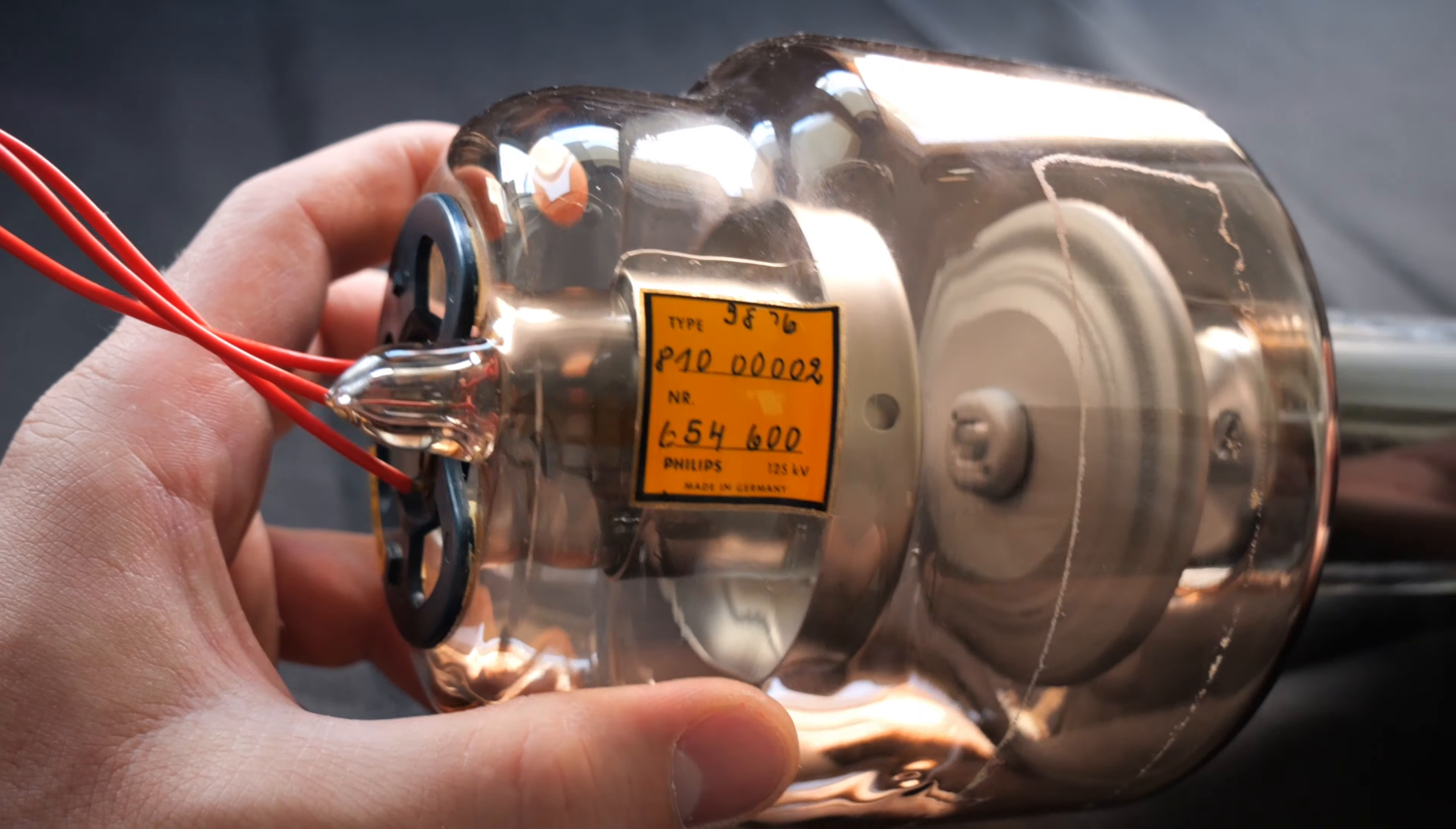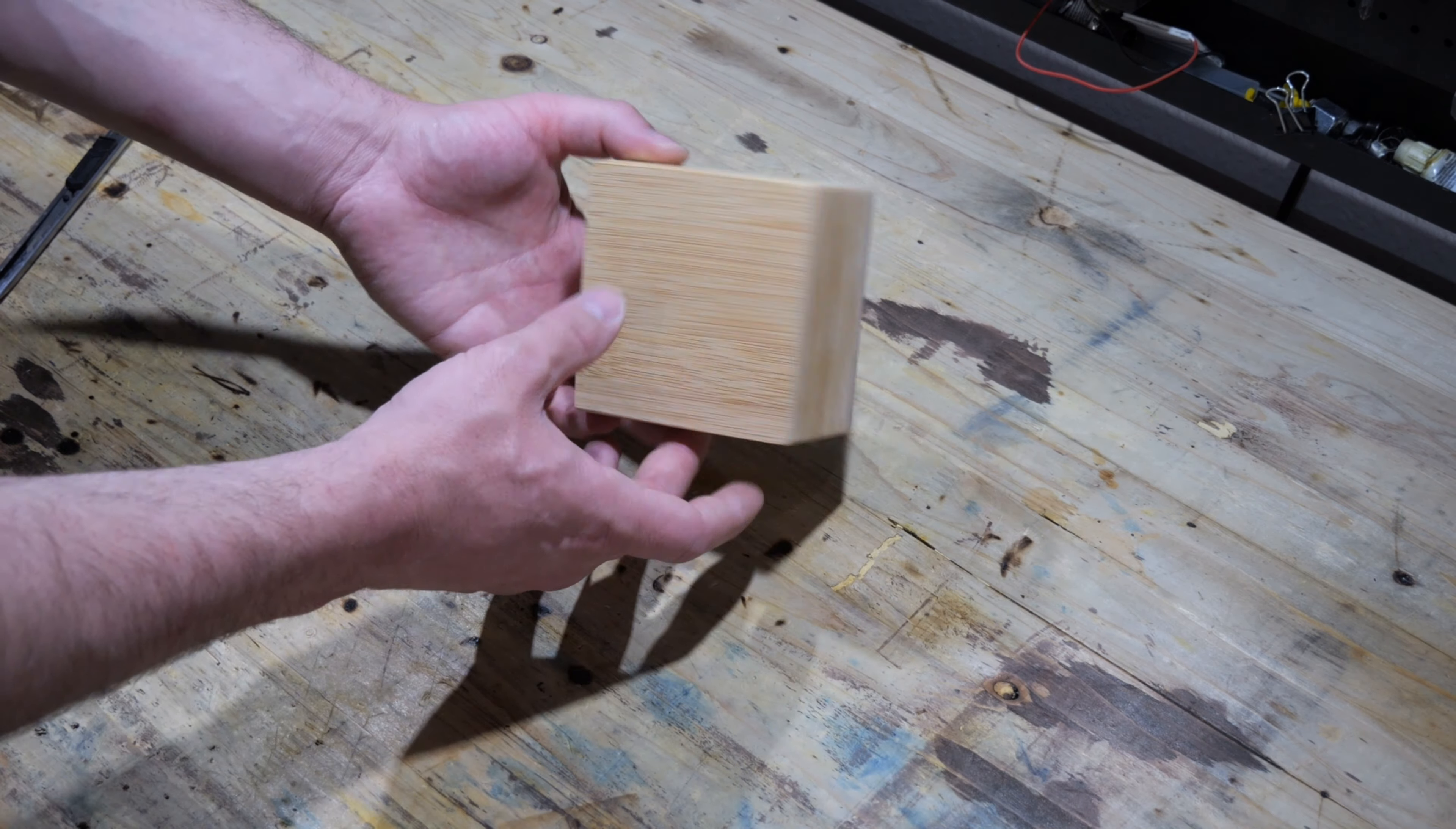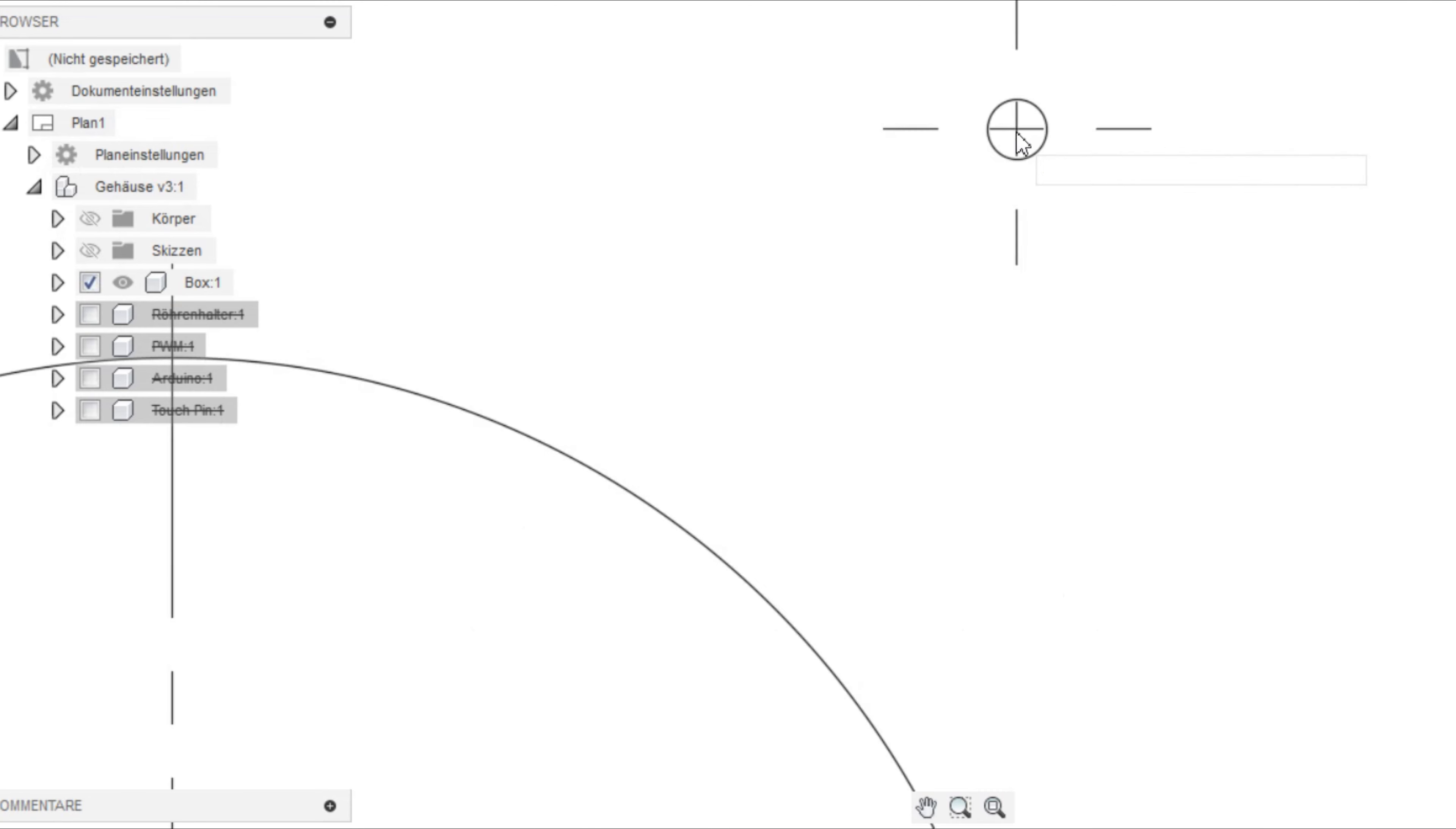I am undecided whether to remove this sticker or not. I would be interested in your opinions on this. The tube needs some kind of support to stand upright without the risk of falling over and imploding. For this, I bought this little box on Amazon. First thing is to print out templates and glue them to the box to drill the holes in the right places.